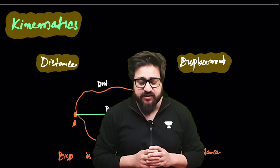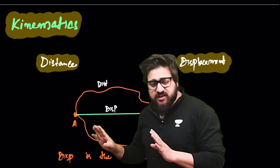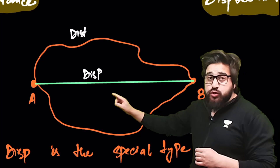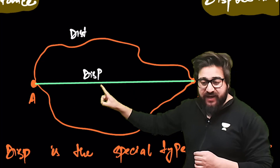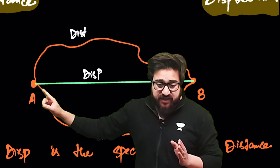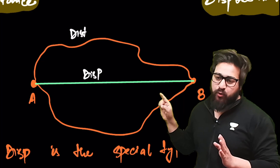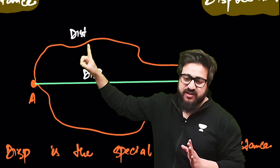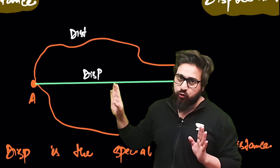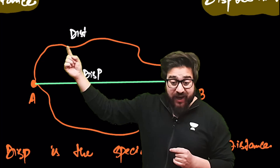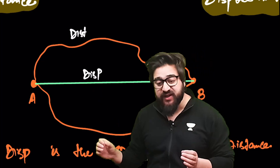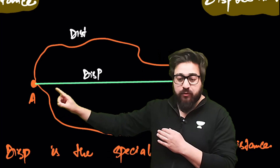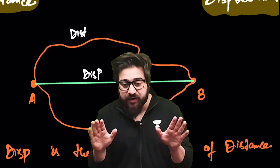The first concept is distance and displacement. If I'm moving from point A to point B and I join A directly to B, we call that displacement — the distance between the initial point and the final point. If you travel through a longer path, that path length is the distance. So distance is the actual path covered and displacement is the shortest path between A and B.